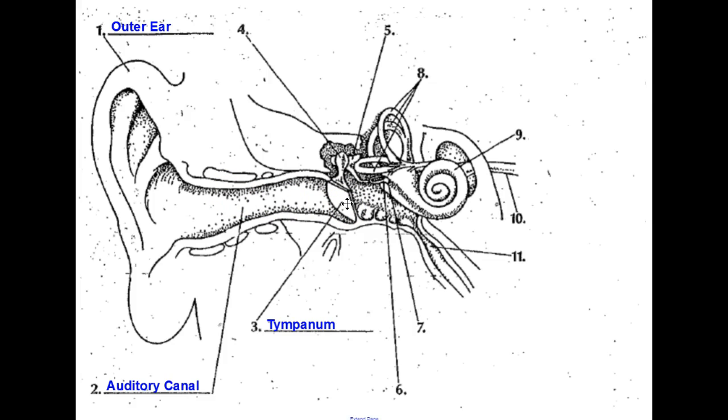Then the sound travels through a series of bones. The first bone that it encounters is the hammer. The next bone is the anvil. The next bone is the stirrup. By the way, each of these is named for its shape. And then it hits the oval window.